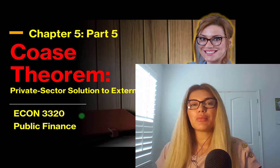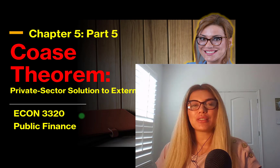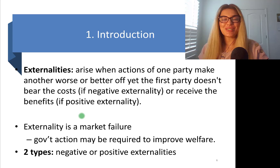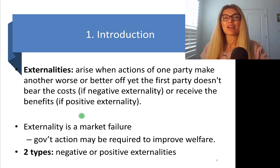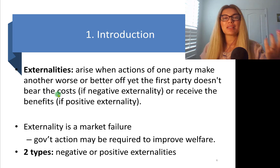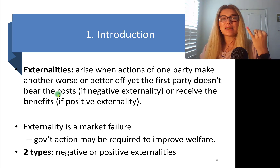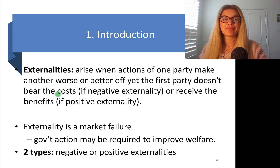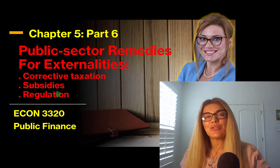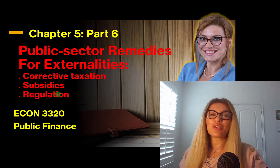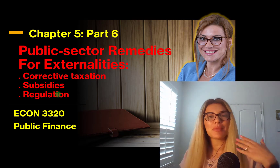In the previous part, we learned about private sector solutions to externalities. We learned about the Coase theorem, which is a really important theorem in the case of negative externalities. Going back to the definition: externalities arise when the actions of one party make another worse or better off, yet the first party doesn't bear the cost or receive the benefits. We talked about positive and negative production externalities, and positive and negative consumption externalities. Now we are back to finding a solution — focusing on public sector remedies. When we hear 'public sector,' that's the government.